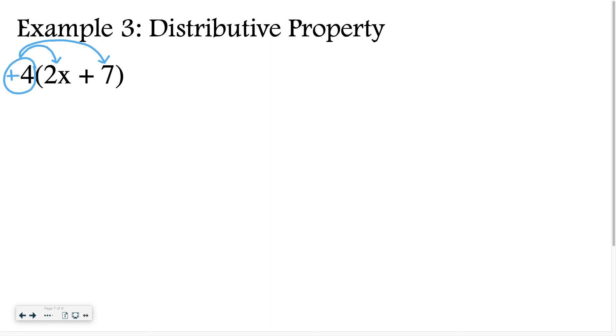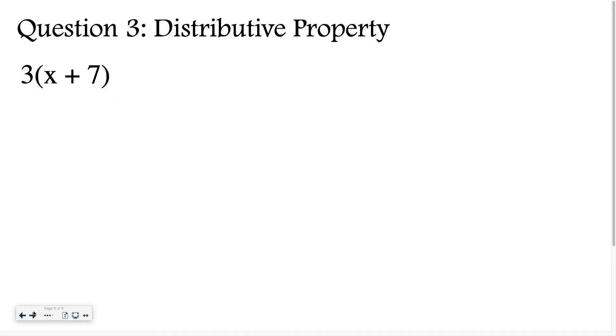In this case, I'm distributing a positive 4 to everything inside the parentheses. So I'm going to say positive 4 times 2x, that gives me 8x plus positive 4 times 7 is 28. Some of you might get confused here and start writing equal something. That's not what this is looking for. You can't just throw an equal sign into this problem. This is as far as you need to go for the distributive property problems. You're going to be left with an expression. Don't make this tougher than it needs to be. Why don't you go ahead and try this one on your own? Good luck.